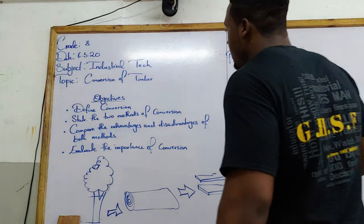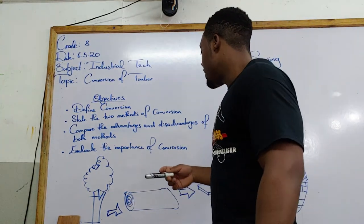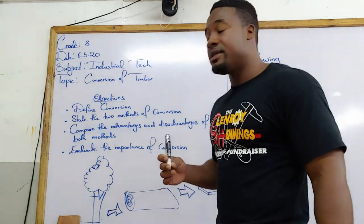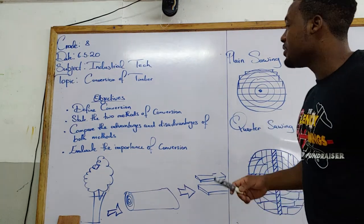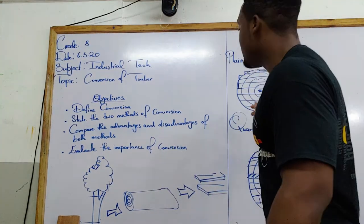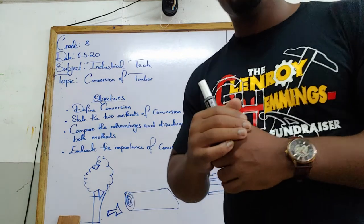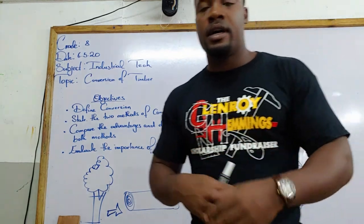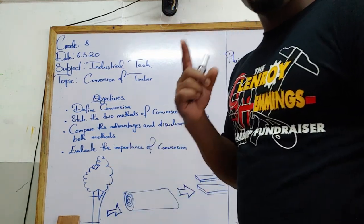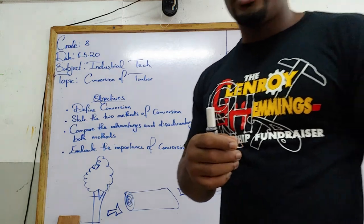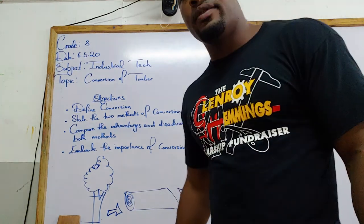Let's recap what we just looked at: define conversion — the process of converting logs into marketable sizes; state the two methods — plain sawn and quarter sawn; compare the advantages and disadvantages of each; and look at the importance of conversion. Ensure that you log into SmartTerm and check for your assignments. Keep up and stay safe.